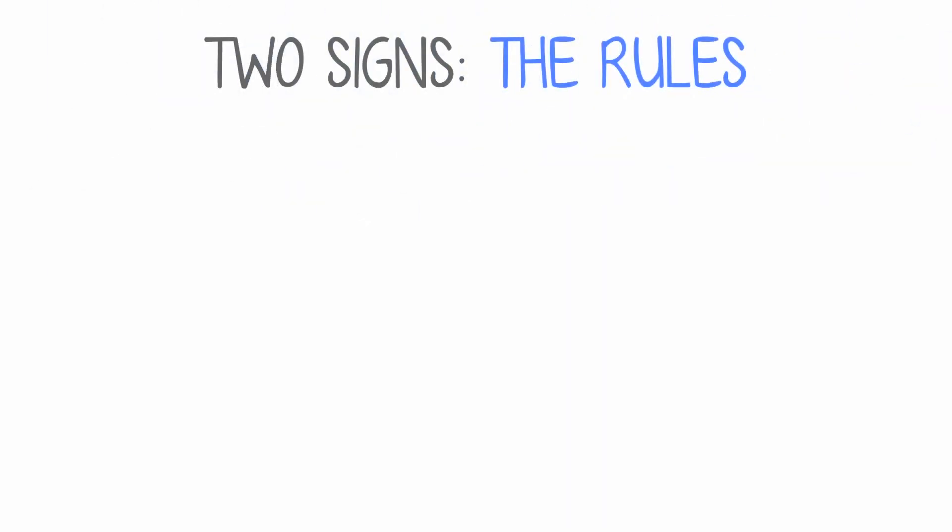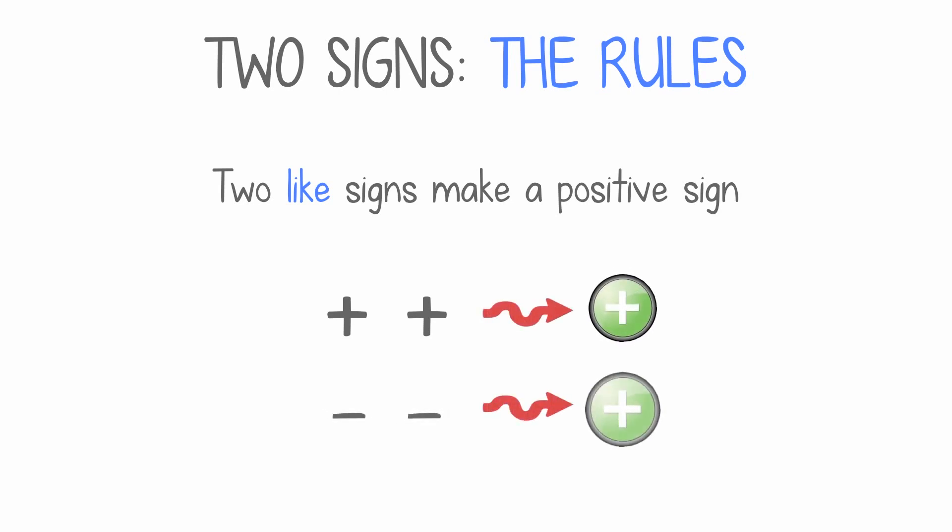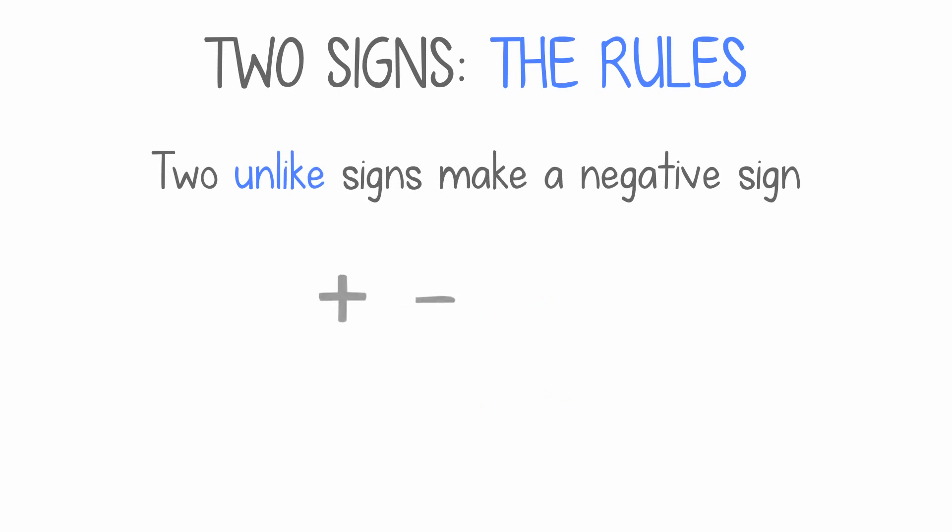The rules. Two like signs make a positive sign. Two unlike signs make a negative sign.